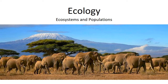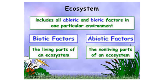Ecology, ecosystems, and populations. An ecosystem includes all of the abiotic and biotic factors in one particular environment. Biotic means anything that's alive — 'bio' means life in Latin. Abiotic factors are the non-living parts of an ecosystem; 'a' in Latin means without, so abiotic means without life. The abiotic would be water, rocks, soil, air, and temperature, while the biotic would be insects, birds, and humans.